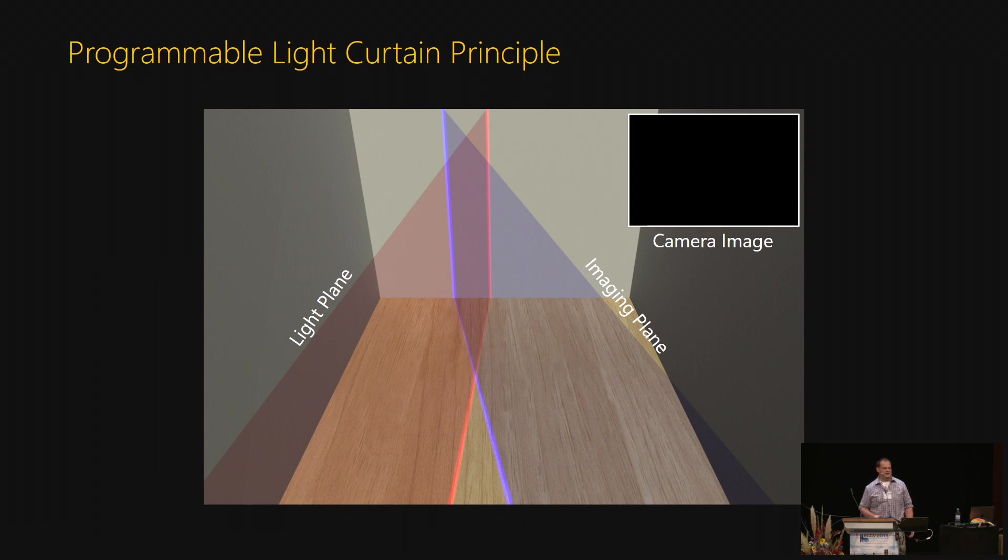Now, if there's nothing at this intersection, the camera doesn't receive any light. But if there is an object along this line, the light is reflected back to the camera and it sees the obstacle. And this is it. This is the entire idea in this paper.